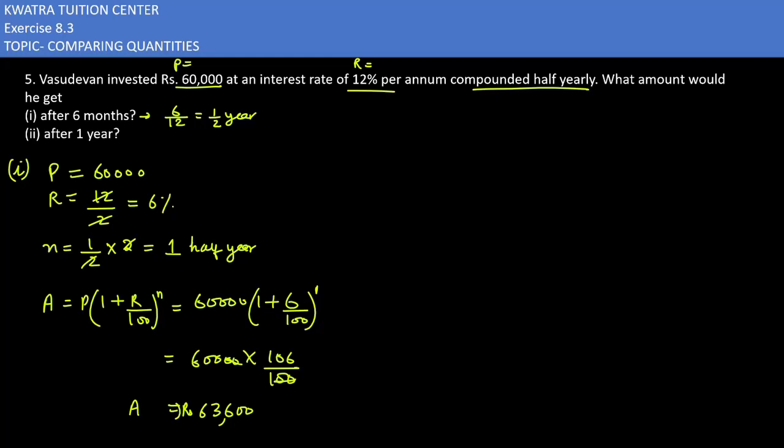After completing 6 months. Now, in the second case, what do you have to tell? 1 year. Principal, how much? 60,000. Rate, how much? It is 6% because we have to remember. Time, how much?